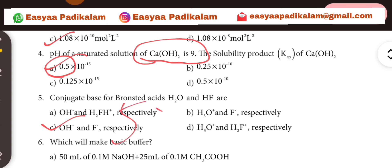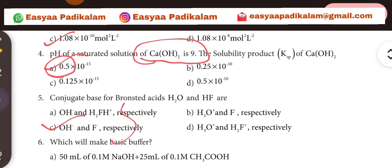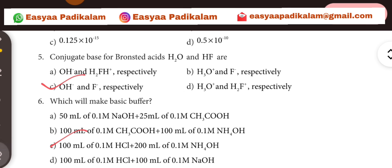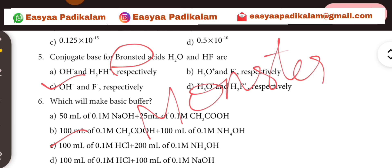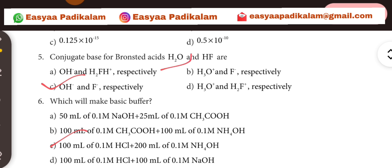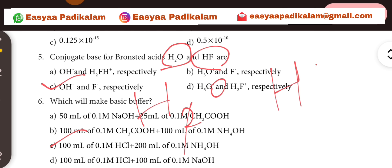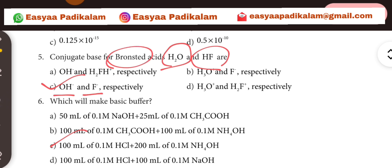Fifth question. The conjugate base for Bronsted acids. If you want to have a base, you can add one H to get the address. Most of you can apply one H to get H to get the conjugate base.